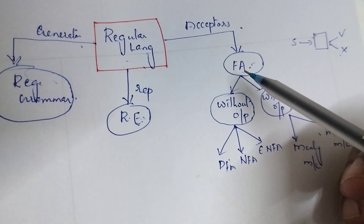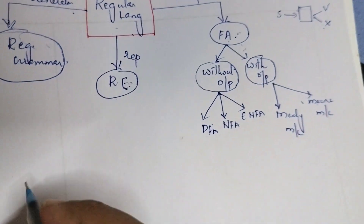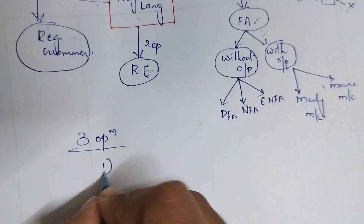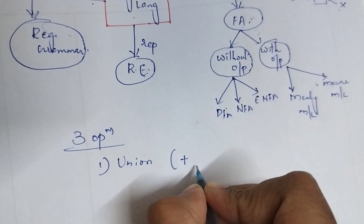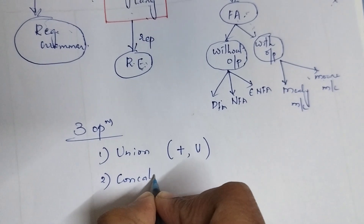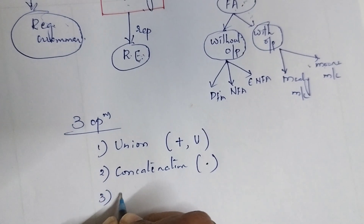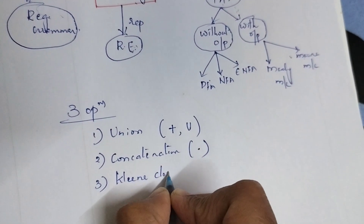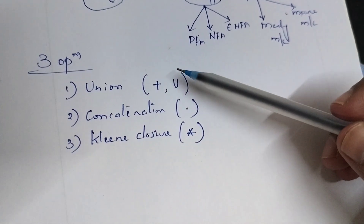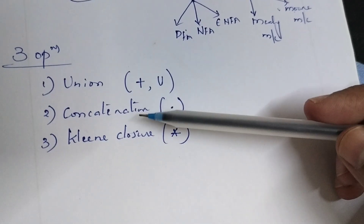If any language can be accepted by finite automata, then we can represent it using a regular expression. A regular expression consists of three main operations. The first one is the union operation, represented by the '+' or '|' operator. The second one is concatenation, represented by a dot. The third one is Kleene star closure, represented by a star symbol. These are the three main operations in a regular expression: union, concatenation, and Kleene closure.